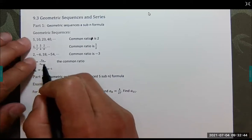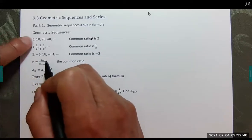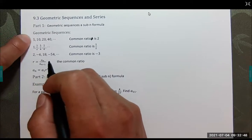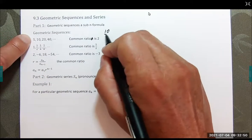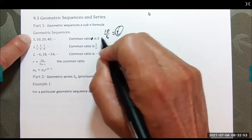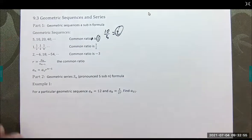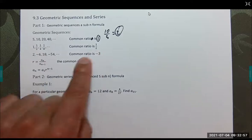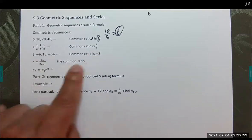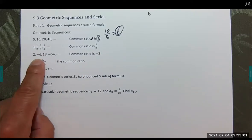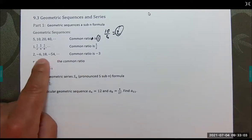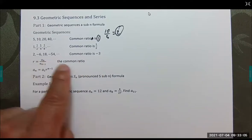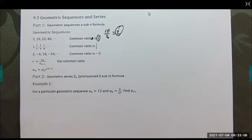One way that we can figure this out is we take any term and divide by its previous term. In other words, 10 over 5 is 2 and there's our common ratio. One half divided by one is one half, negative 6 divided by 2 is negative 3, and so on. It's going to be a common ratio.